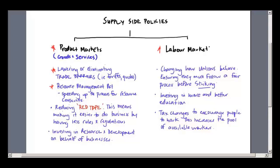Secondly, the Resource Management Act. The idea behind the RMA is that the government's focus is on speeding up the process for resource consents. Any extra cost that doesn't need to be there, the government is looking at removing. That allows businesses to gain a resource consent — the permission to redevelop land, build factories, or anything that might have an impact on the environment — quicker, faster, and at lower cost, which will impact on their profit.